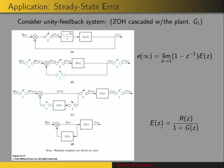If we just want to get an expression for E of Z, we end up with E of Z equal to R of Z divided by one plus G of Z. This is the function we're going to look at, and we want to find the final value of this function. If we know the input R of Z, the Z-transform of the input, we'll be able to find the final value of the error. We're going to do this for three different types of input: unit step, unit ramp, and parabolic input.